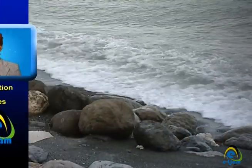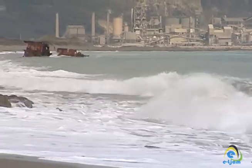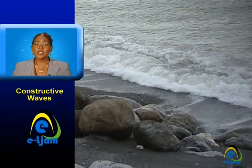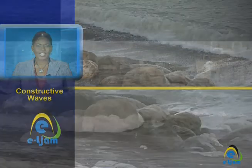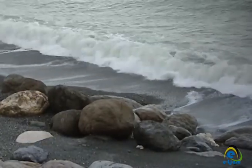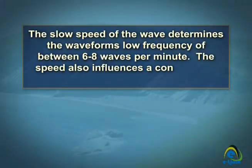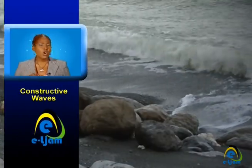Look at these two wave motions. The first is the constructive wave and the other a destructive wave. Did you notice that the first wave type, the constructive wave, approached the shore much slower than the destructive wave? The slow speed of the wave determines the waveform's low frequency of between six and eight waves per minute. The speed also influences a constructive wave's long wavelength. The wave also had a small wave height, that is, a short distance between crest and trough.